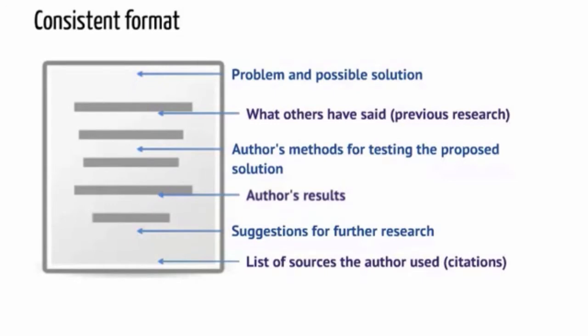First, the problem is identified and the author offers a possible solution, or a theory. The author outlines what others have said about the problem — previous research. The author describes his or her methods for testing the solution or theory, and then discusses the results. Suggestions for future research are given, and finally the author lists all of the sources he or she used, also known as citations or references.